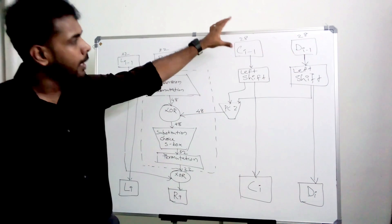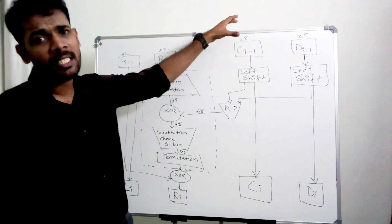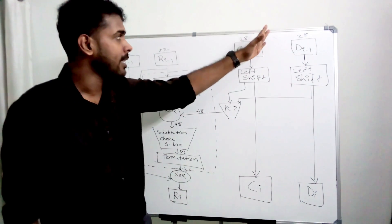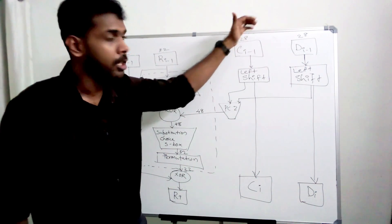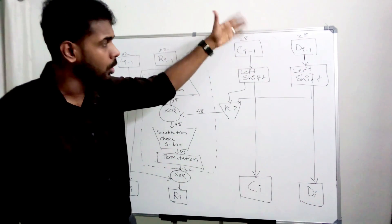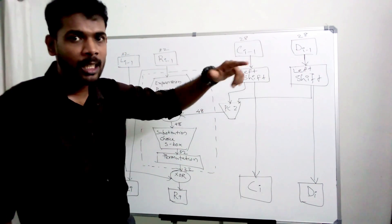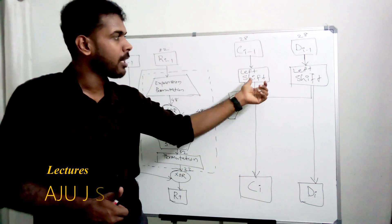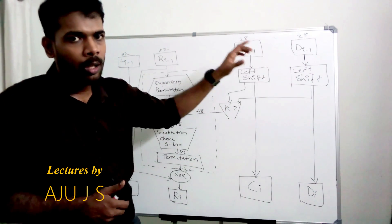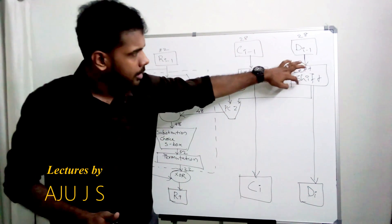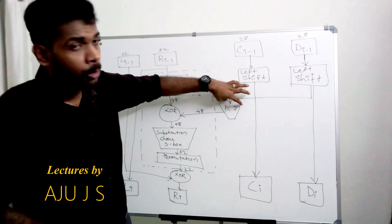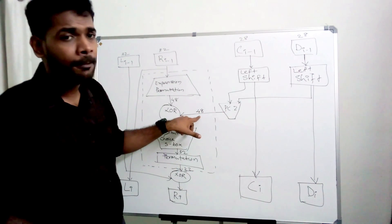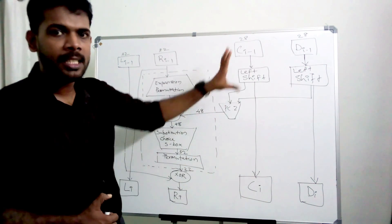For key generation: we start with a 64-bit key. The parity bits are removed, leaving 56 bits. These 56 bits are split into two 28-bit halves. Permutation choice 1 (PC1) is applied, followed by left circular shifts. After the left circular shift, compression permutation (PC2) gives a 48-bit subkey output.